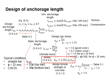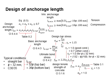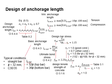The ultimate bond strength is given by clause 8.4.2. η1 (eta1) represents the bond conditions, whether good or poor. When the bond condition is good, η1 is taken as 1.0. For other conditions, 0.7 is applied.